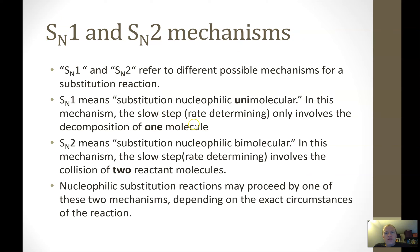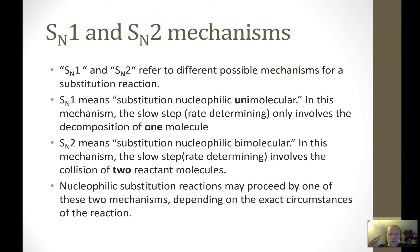This brings us to SN1 and SN2 mechanisms — two different possible mechanisms for a substitution reaction. SN1 stands for substitution nucleophilic unimolecular: the slowest step involves the decomposition of only one molecule. SN2 means substitution nucleophilic bimolecular: two molecules are involved in the slowest step. Depending on the exact circumstances, a reaction will proceed by one of these two mechanisms.